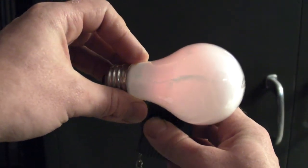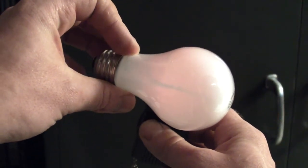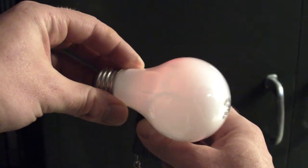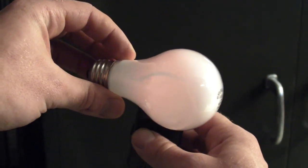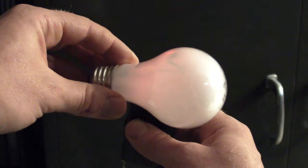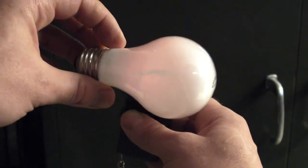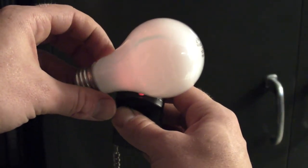And then you can see the shadow of the filament and the wires in there very clearly projected onto the phosphorous screen on the inside there. The phosphor coating on the inside of the glass.